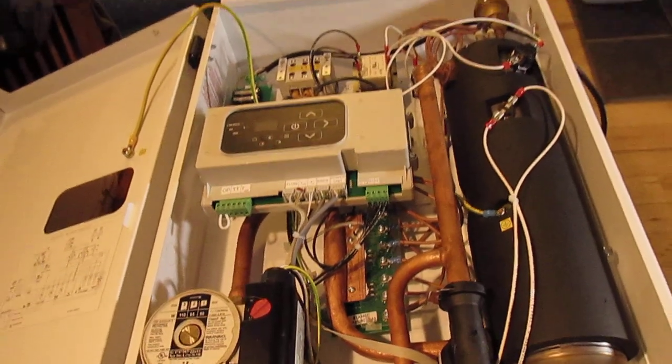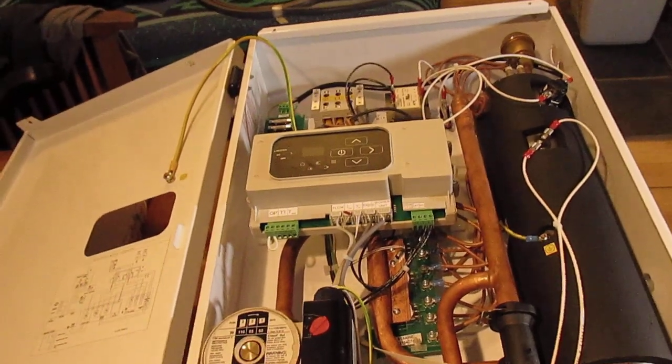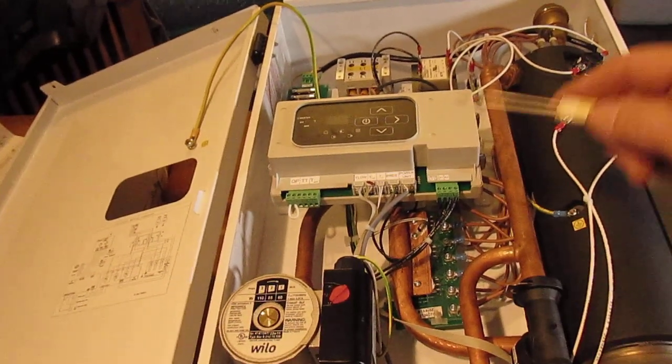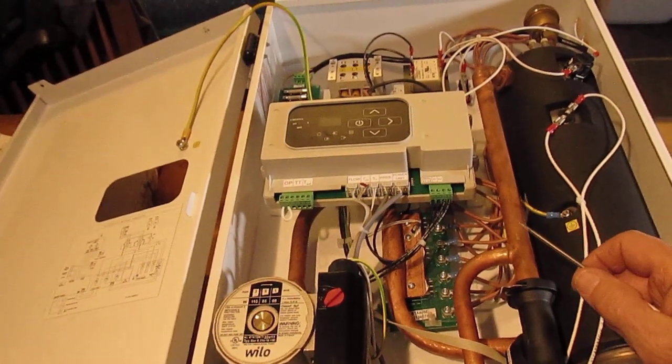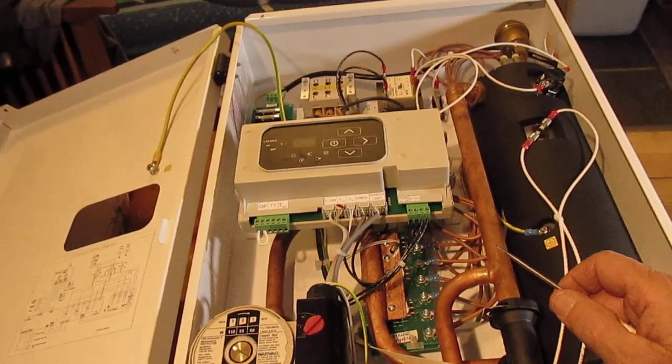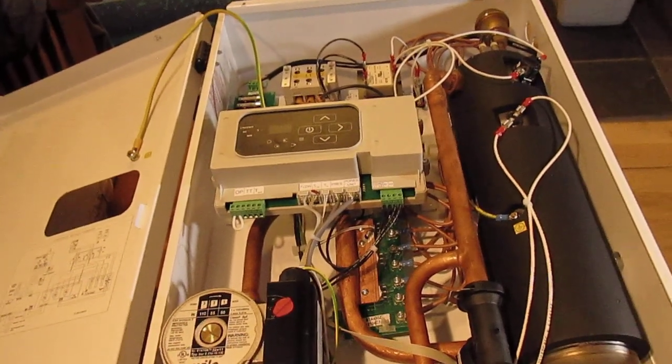So all you need is your manifold, right, where all your pipes connect to your loops. And then you connect this on. If the house is a small house, say 1200 square feet or less, this should probably work fine as long as it's super insulated.